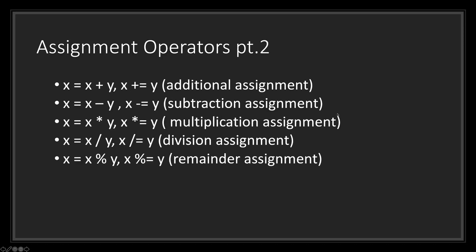Here are some other assignment operators you'll be using in GDScript: the addition, subtraction, multiplication, division, and remainder assignment. You can write these out by saying that the operand on the left will be assigned the values of x plus y. You can also use the shortcut version x plus equals y, which is the same as writing out x is equal to x plus y. On the left side you'll notice the written out version and on the right side you'll notice the shortcut version.